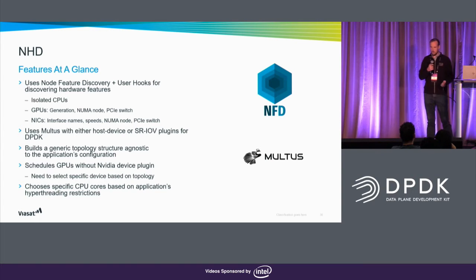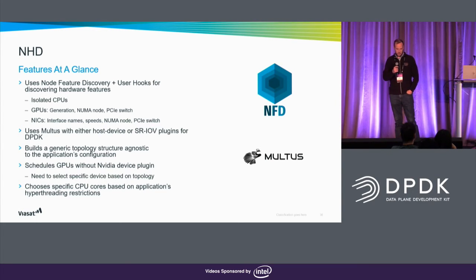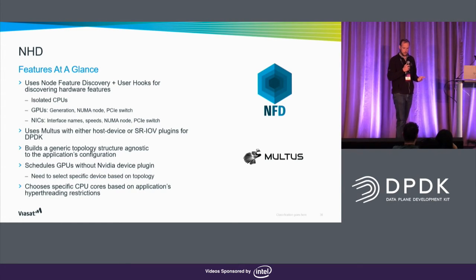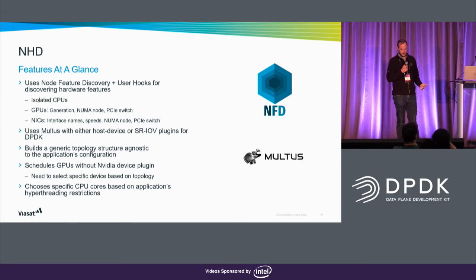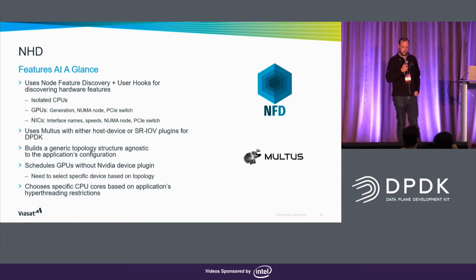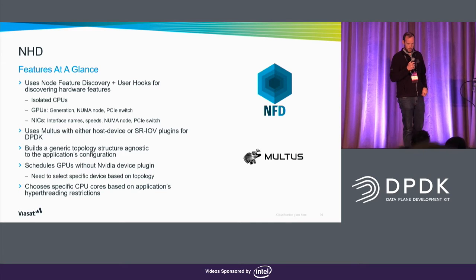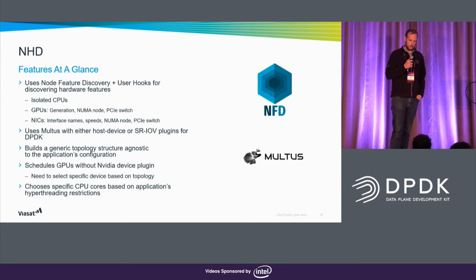We use a lot of the features that were mentioned in the previous talk, like node feature discovery, which labels the nodes as to what CPU types they have, how many cores there are. We added some hooks into it so that it tells you which CPU cores are isolated, which GPUs it has, which NUMA node they're on, which PCIe switch, and a whole bunch more.